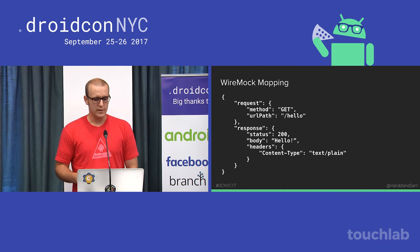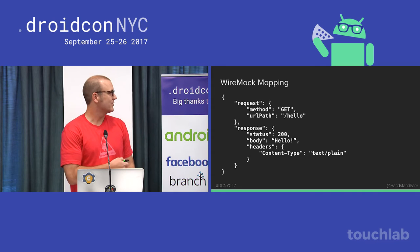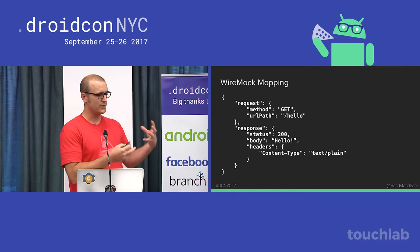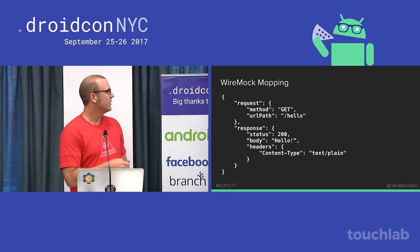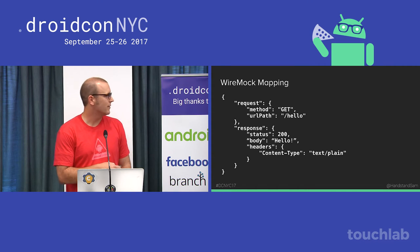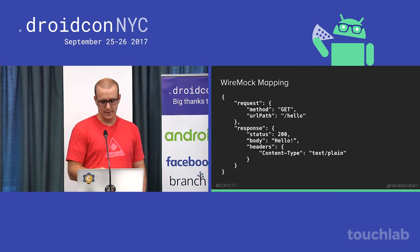What does a WireMock mapping look like? You have the request — the information it's looking for to match. If the request comes in as a GET to '/hello', then WireMock knows to return a response of status 200, body 'hello', and content type text/plain.